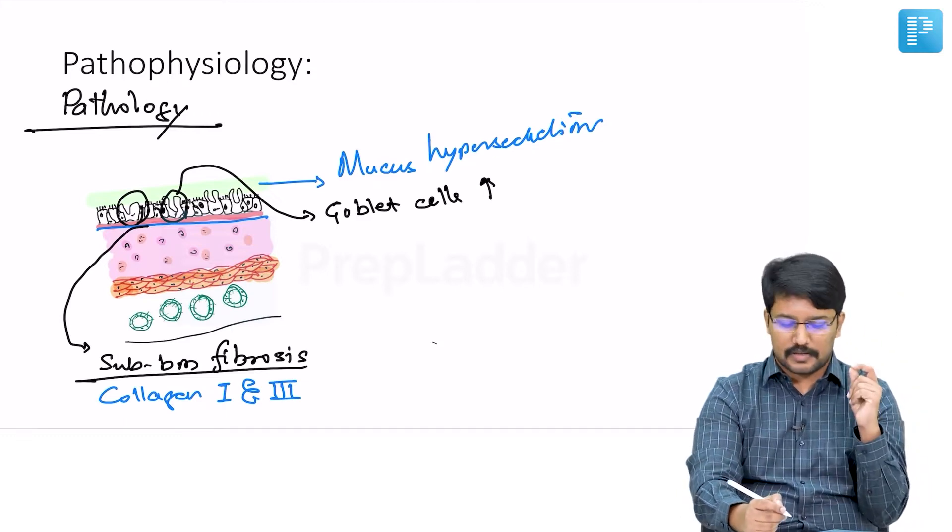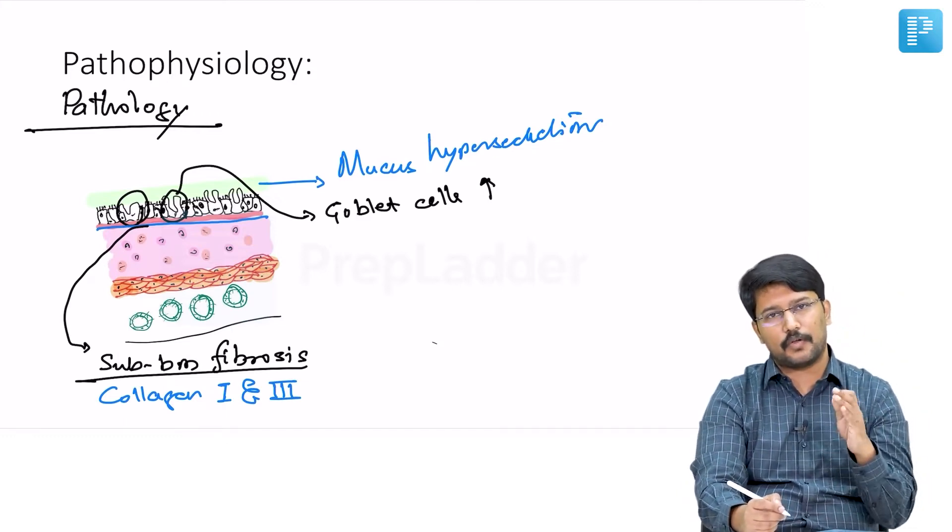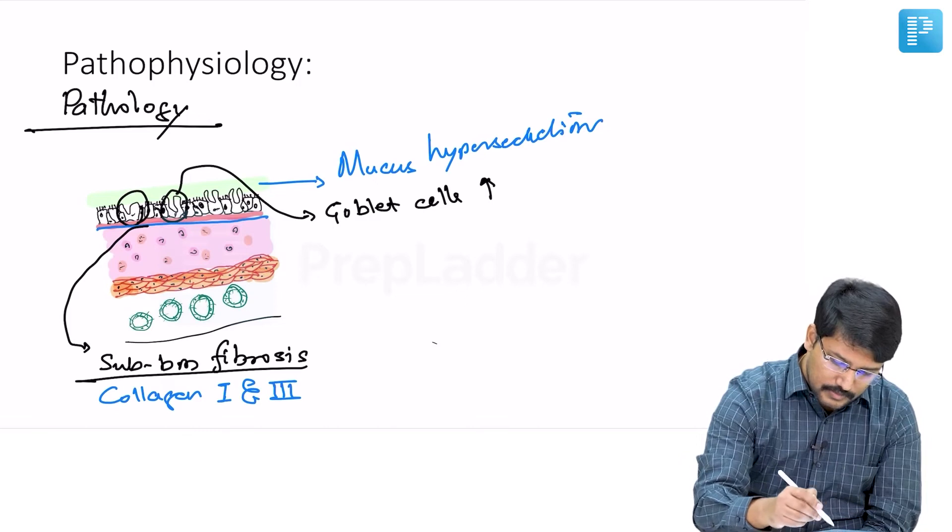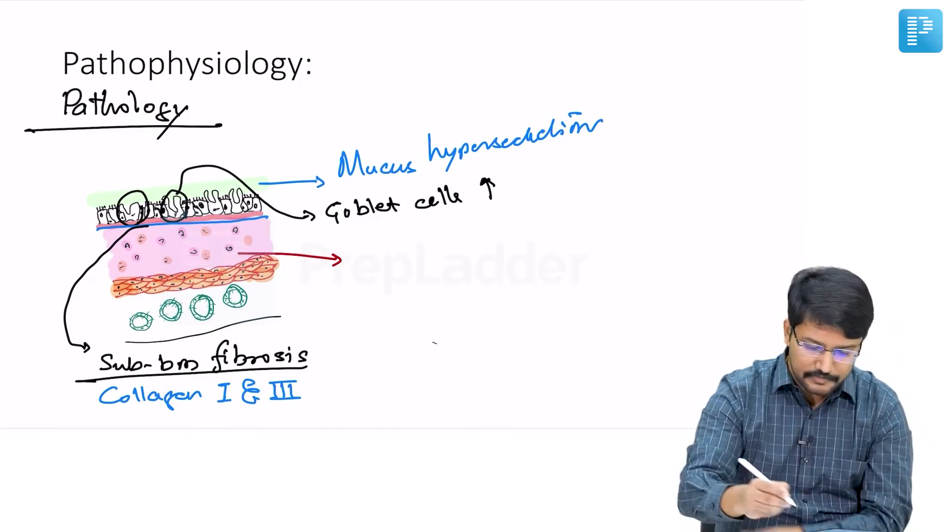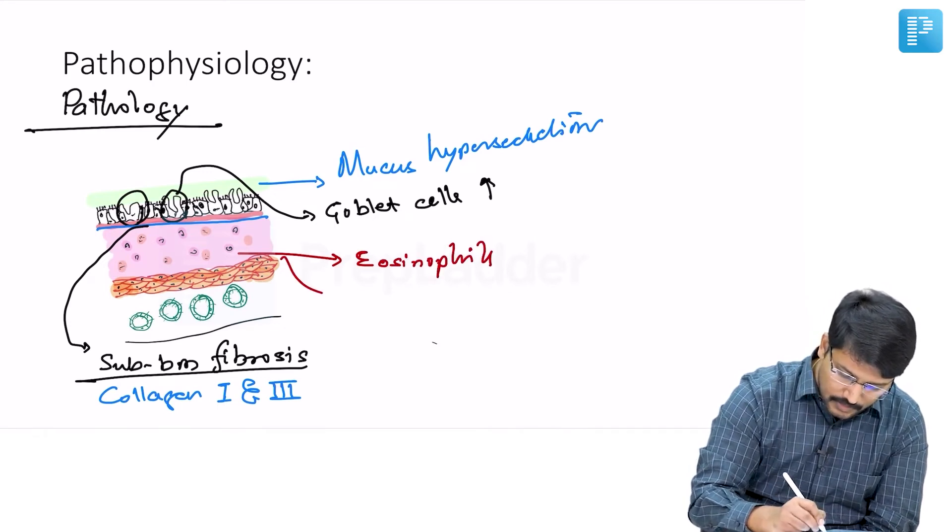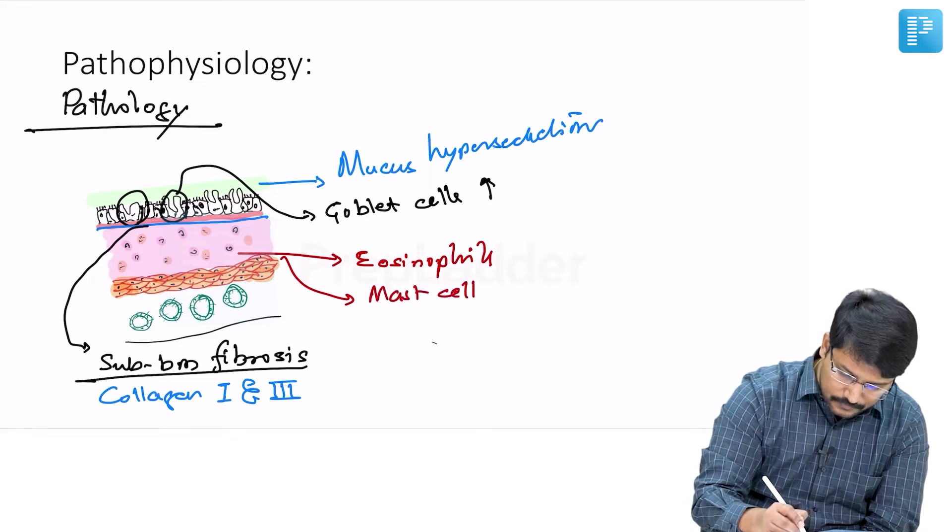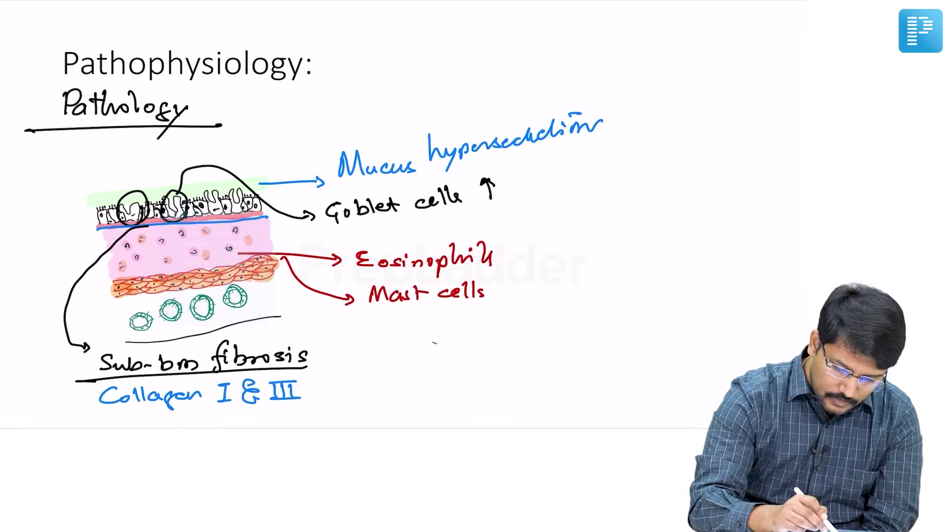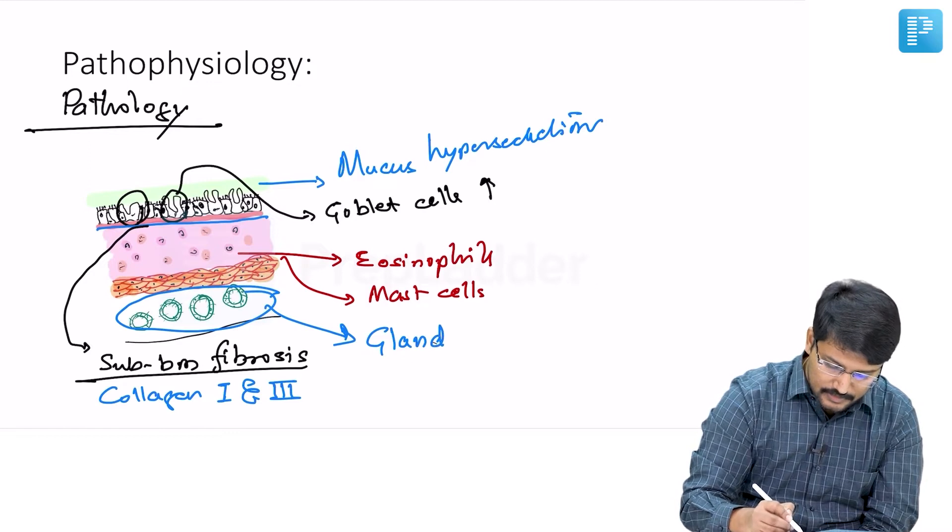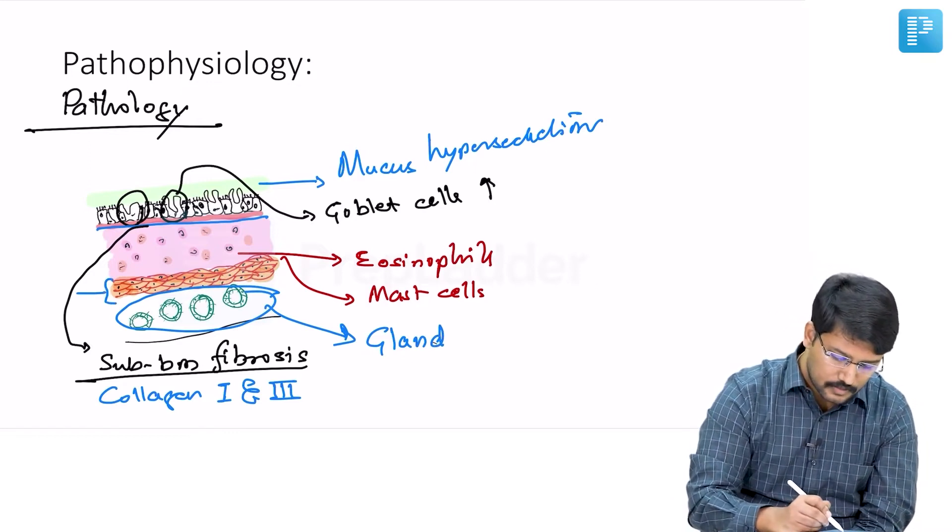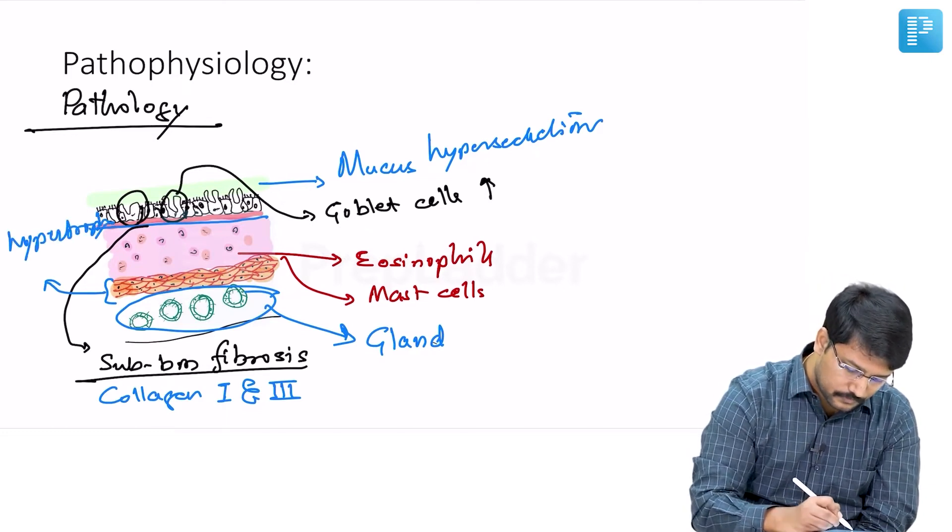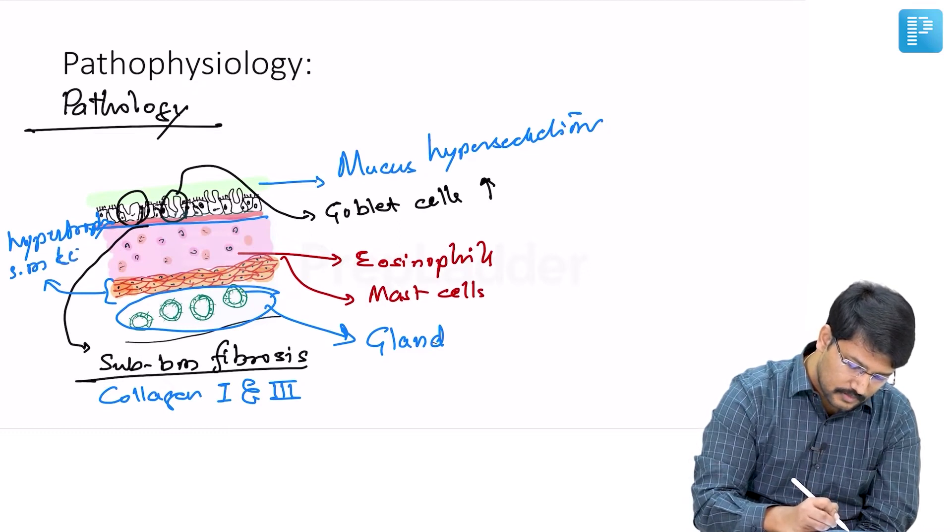You may notice infiltration by eosinophils and mast cells. There's also increased number of glands - gland hyperplasia - and hypertrophy of smooth muscle layer.